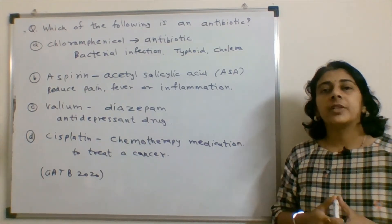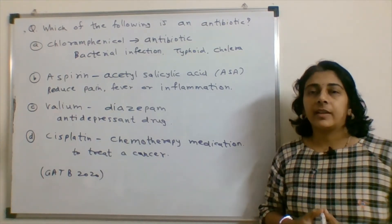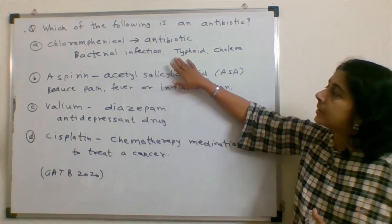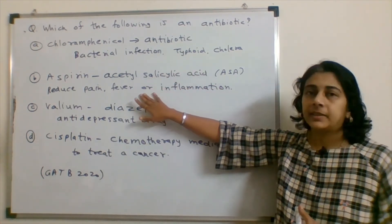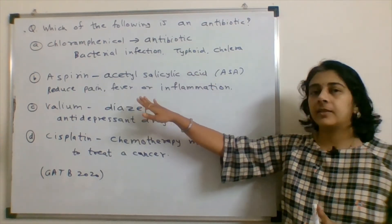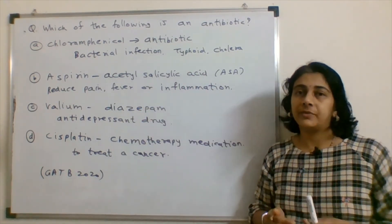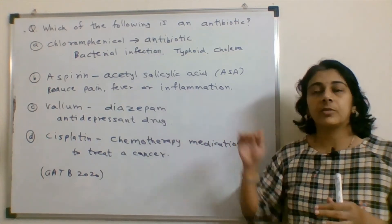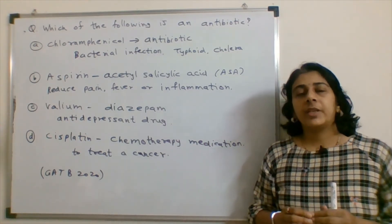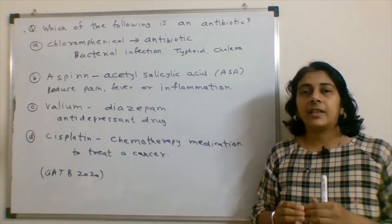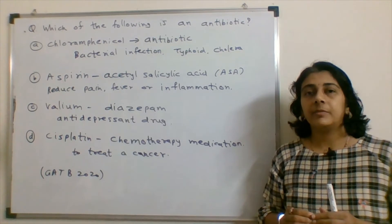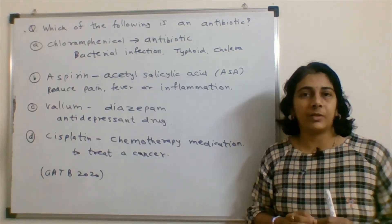Chloramphenicol is used for typhoid infection and cholera infection. The second option, aspirin, is acetylsalicylic acid — it is used to reduce pain, fever, and inflammation. Aspirin is sometimes used in heart attack conditions as well.